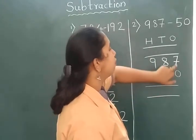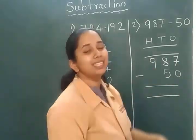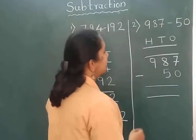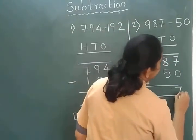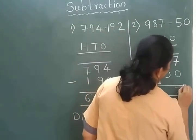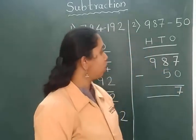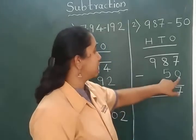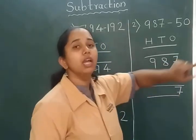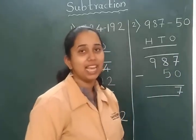0 from 7. The answer is 7 because whenever we subtract 0 from any number, answer remains itself.